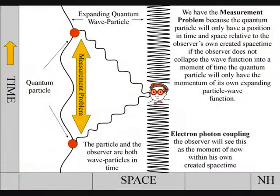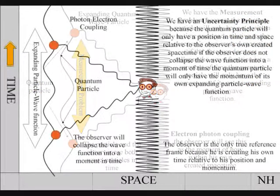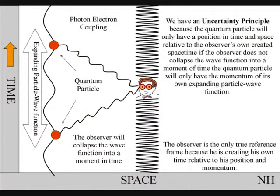We have a measurement problem, or uncertainty principle, because the quantum particle will only have a position in time and space if the wave particle function collapses.